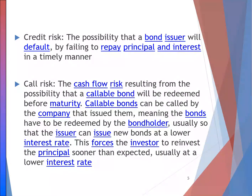For credit risk — credit risk is the risk that the bond issuer might not be able to pay the coupon or the principal. It is the possibility that a bond issuer will be in default if they fail to pay the principal and interest in a timely manner, or may fail to repay the principal and interest at all. This credit risk depends a lot on the financial stability or cash flow of the bond issuer.